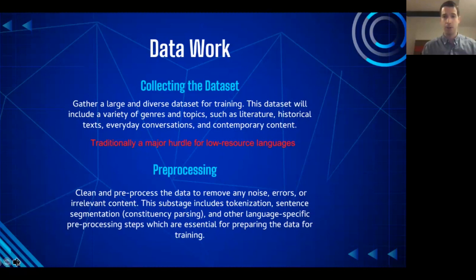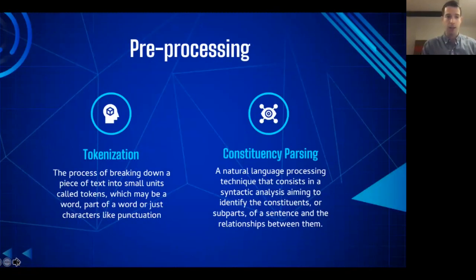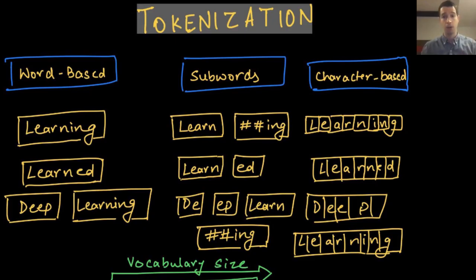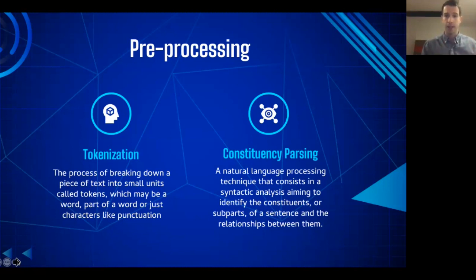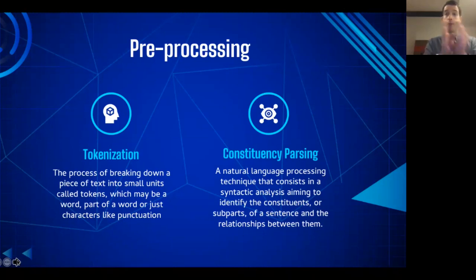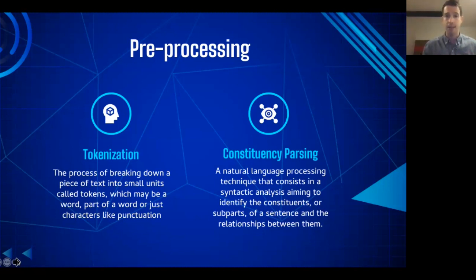If you are a language expert in the endangered language in question, you need to team up with natural language processing experts as well — you're going to need a broader team, not just yourself. Tokenization is essentially the process of breaking down a piece of text into small units called tokens, which might be entire words, parts of a word, or just characters like punctuation. Successful tokenization necessitates collaboration between a language expert and an NLP expert, because only the language expert knows the grammar and structure well enough to advise on how to fragment the text, and only the NLP expert has the expertise to know how to break those texts into small units.